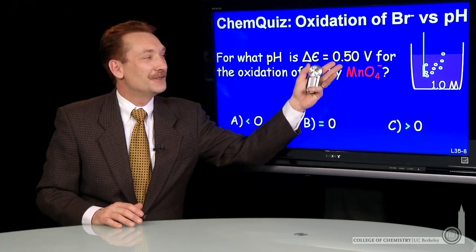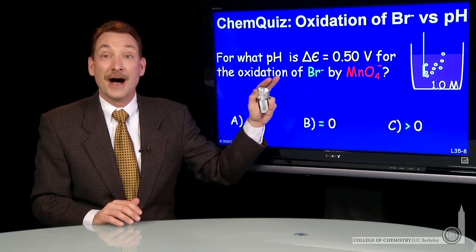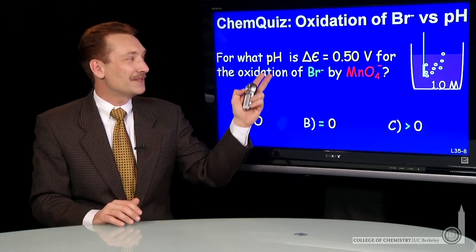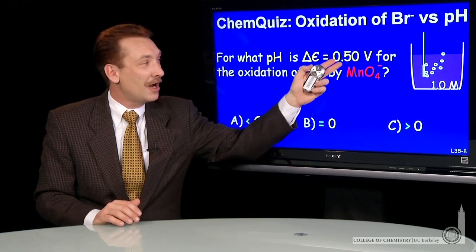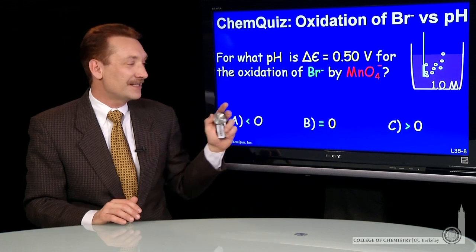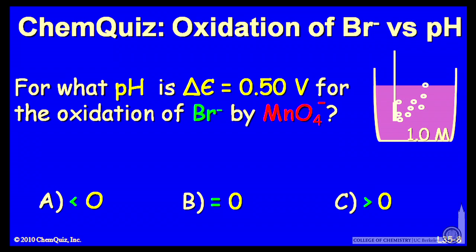Let's look at a cell potential of 0.5 volts for the oxidation of bromide by permanganate. The question I have is, what pH would cause this voltage? Would it be a pH that's less than 0, equal to 0, or greater than 0? Think about that for a minute and make a selection.